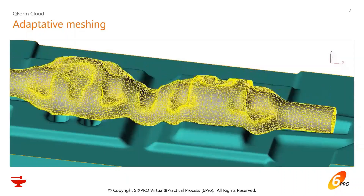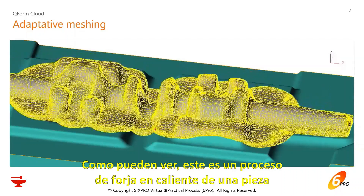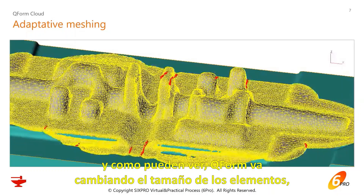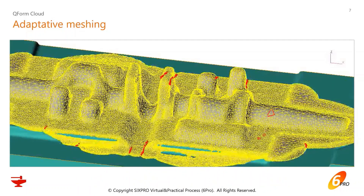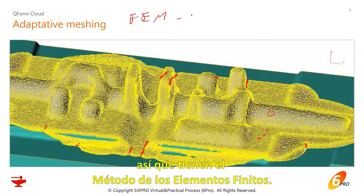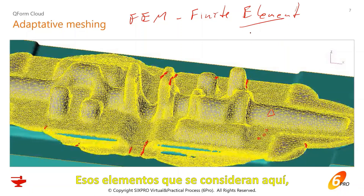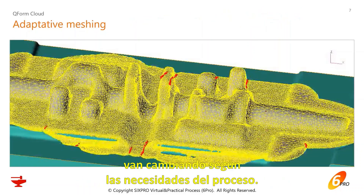Now let me talk about adaptive meshing in Keyform. As you can see, this is the hot forging process of a part. With adaptive meshing, you can see the mesh keeps changing the size of the elements. It starts with FEM — a finite element method — and those elements keep changing according to the needs of the process.